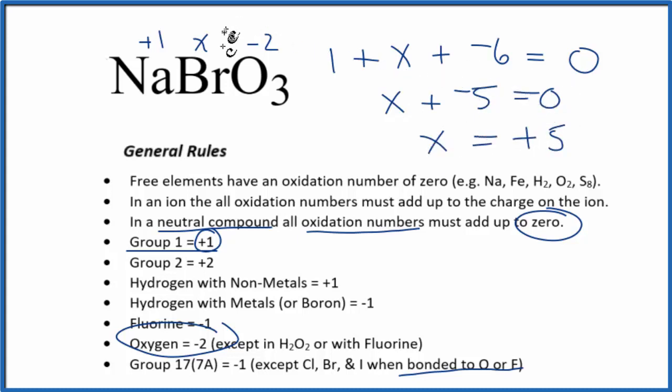So the oxidation state on the bromine here, in NaBrO3, is going to be a positive five. And if you add these numbers up, multiply this by three here, add everything up, you'll find that these numbers, they equal zero.